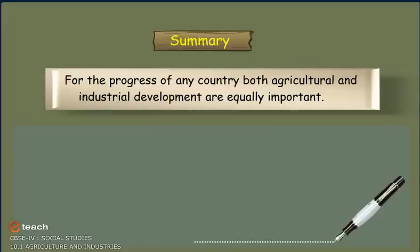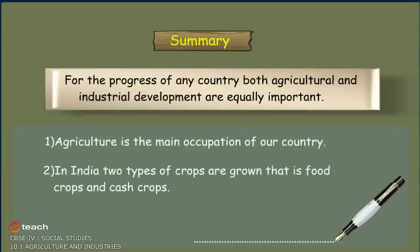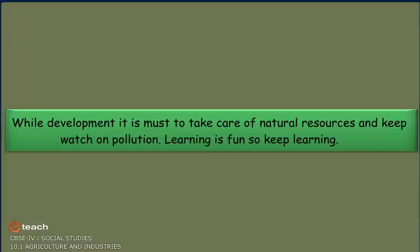Summary: For the progress of any country, both agriculture and industrial development are equally important. Agriculture is the main occupation of India. Two types of crops are grown in India: food crops and cash crops. Industries can be classified into cottage, small-scale, and large-scale industries. While developing, it is essential to take care of natural resources and keep watch on pollution. Learning is fun, so keep learning!